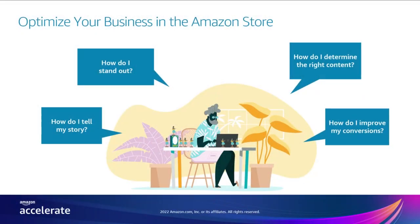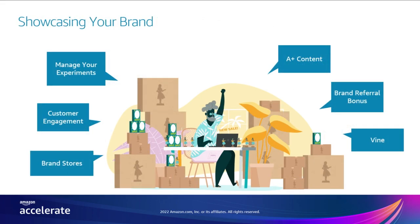When you're trying to optimize your business in the Amazon store, there are so many things to think about. How do I stand out among competition? How do I determine the right content for my product listings? How do I improve conversions? How do I drive customer satisfaction? We understand your concerns, and that's why we've built tools that make it easier for you to optimize and grow your business in the Amazon store. A-plus content is one such tool in your toolkit, and today we'll talk about how you can get the most out of it.